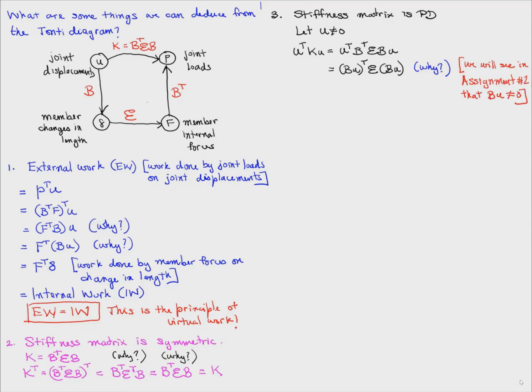So bu equals delta. This is equal to delta transpose e times delta, which is greater than zero because e is positive definite. Again, why is e positive definite? Think about that. It turns out that one half u transpose ku is the elastic energy stored in the members of the truss. And this is why k being positive definite is significant.